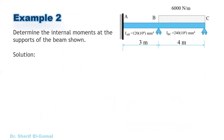Now let's go to example two, which has some differences. First, there is a roller end support, which affects the stiffness factor, distribution factors, fixed end moments, and carry-over. Second, the moment of inertia is not constant: I_AB = 120 × 10⁶ mm⁴ and I_BC = 240 × 10⁶ mm⁴, so I_BC is twice I_AB. We are required to determine the internal moments at supports and also find reactions, draw the shear, and draw the bending moment diagram.